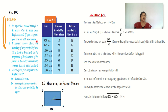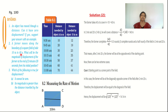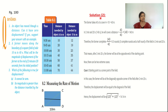The next question: a farmer moves along the boundary of a square field of 10 meters in 40 seconds. So each side of the square field is 10 meters, and the farmer completes one full round in 40 seconds. What will be the magnitude of the displacement of the farmer at the end of 2 minutes and 20 seconds from his initial position? I have given you the solution — try to understand it.